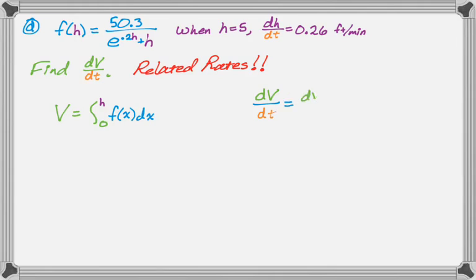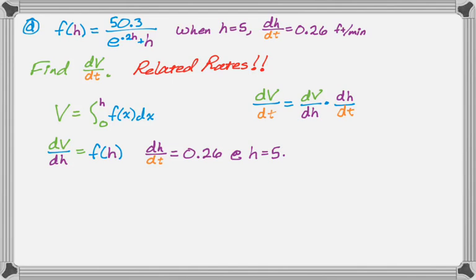So dv dt should be dv dh, which is what we can find using the second fundamental theorem, times dh dt. And so if we use the second fundamental theorem, we get dv dt is just f of h. And we know that dh dt at the time, or rather the height we're interested in, is 0.26.